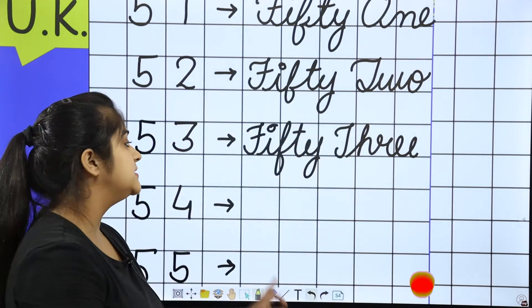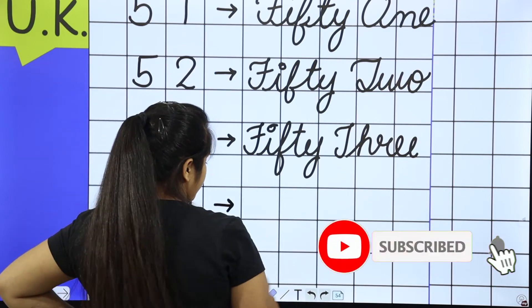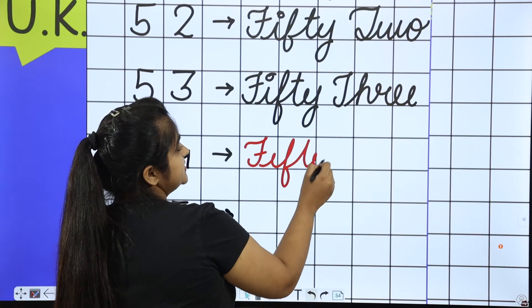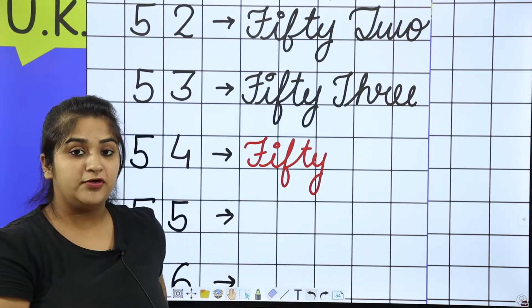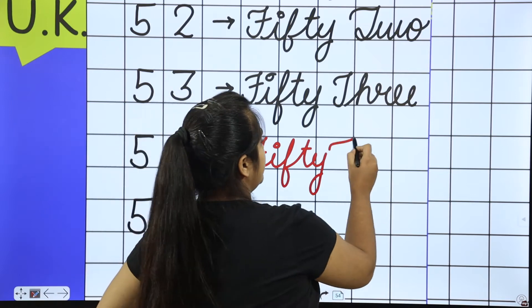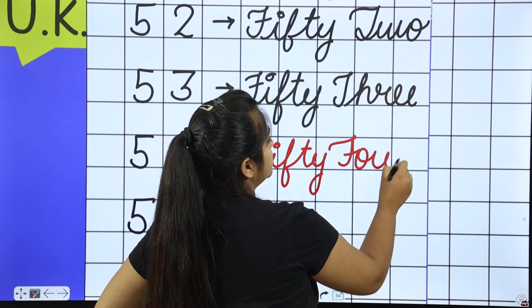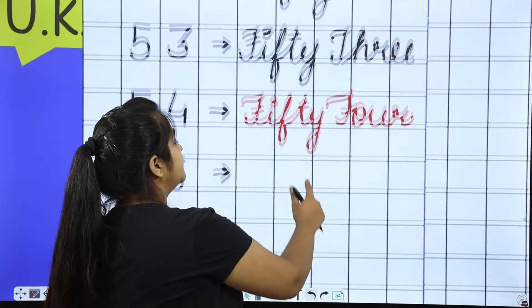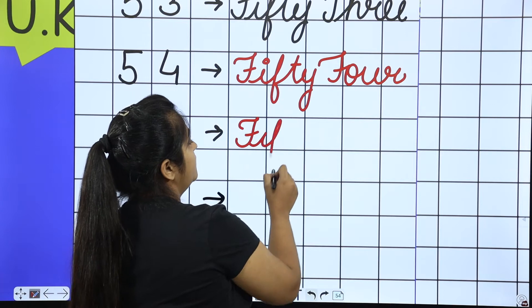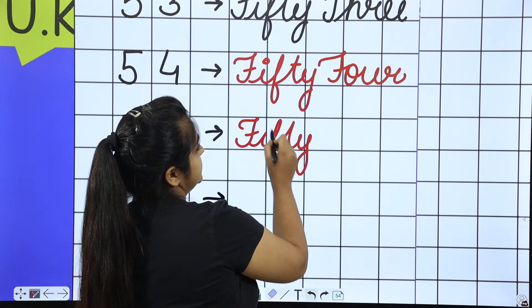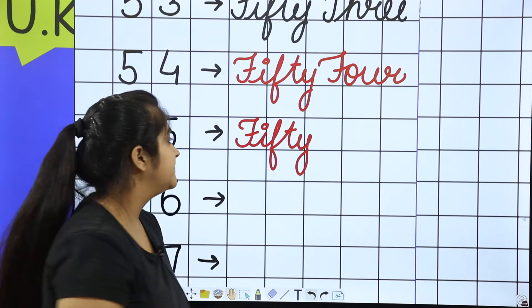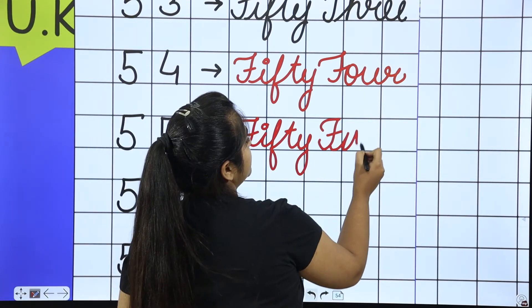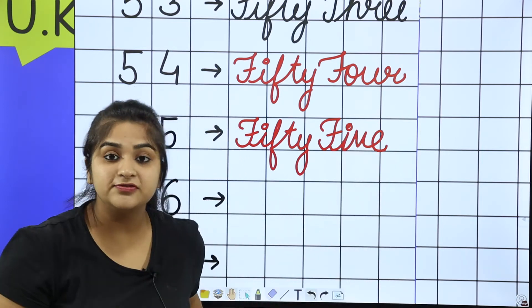I will write in pencil with 54. F-I-F-T-Y, then F-O-U-R. What becomes 54? FIFTY FOUR. Next will come 5, F-I-V-E. So 55 is FIFTY FIVE.